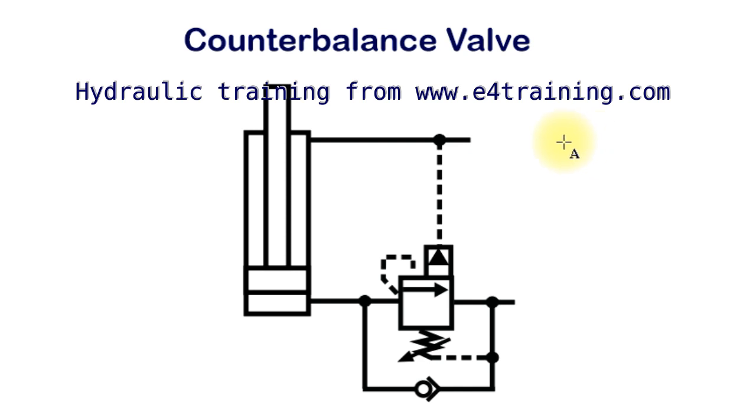So what we do then is we actually drive the cylinder down. So if we put pressure to, in this case lower the cylinder, it puts pressure on here which actually opens the valve a little bit. There are various different pilot ratios and lots of controls on here that we won't go into. But we actually drive the cylinder down so it's always in control.